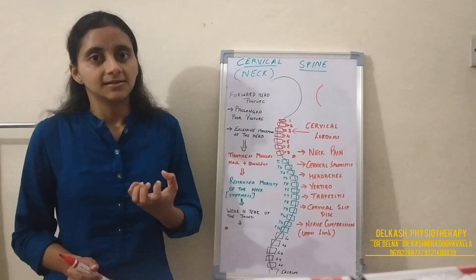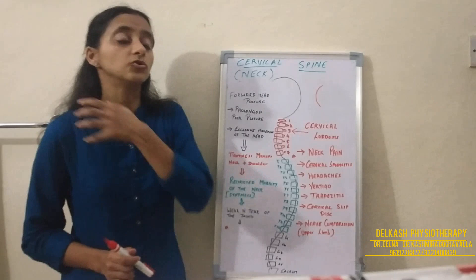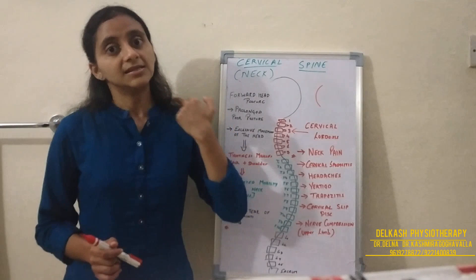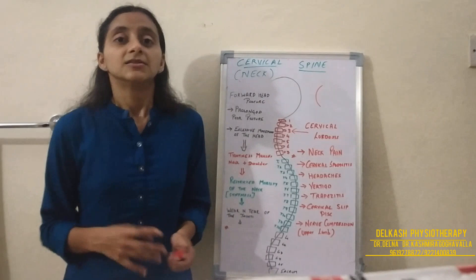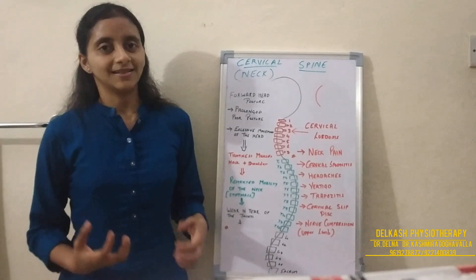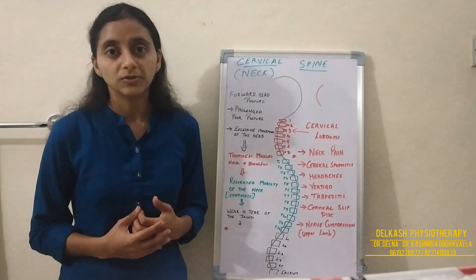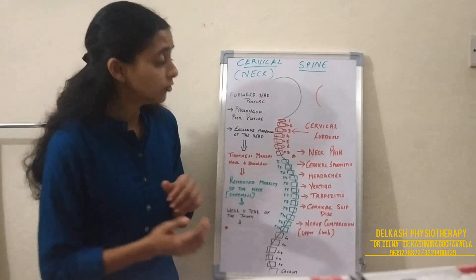Trapezitis — the trapezius muscle at the nape of the neck — tends to get tight due to neck problems. These muscles also tighten during stressful situations: fear, stress, and anxiety. Our first reaction to fear or stress is to contract, and the trapezius muscles go tight. Because they are closely associated with the neck, they also give rise to neck pain.